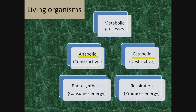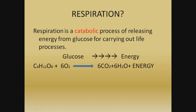A catabolic process is one in which food or anything is broken down. Respiration is an example — in the presence of oxygen, food or starch is broken down into small pieces and energy is produced. Respiration is a catabolic process of releasing energy from glucose for carrying out life processes. It occurs in many steps, done by enzymes, and the chemical equation is: C6H12O6 + 6O2 → 6CO2 + water + energy (ATP).